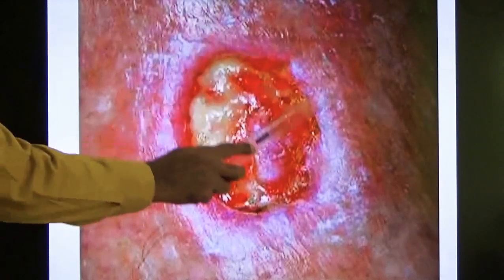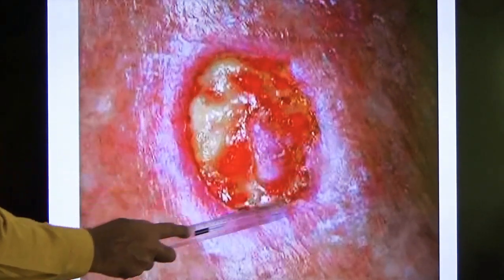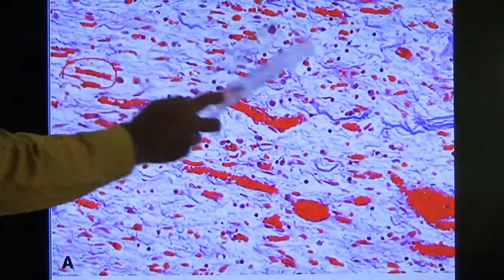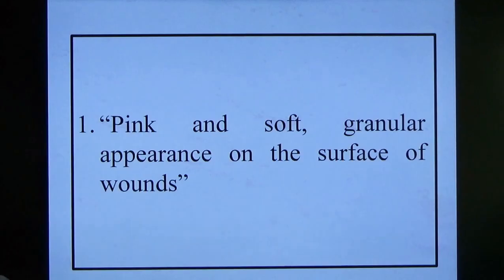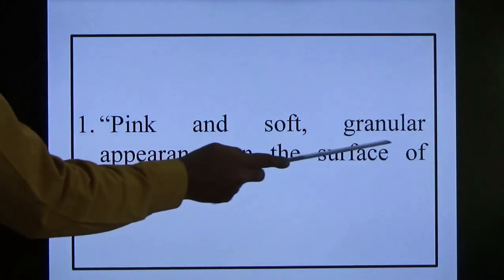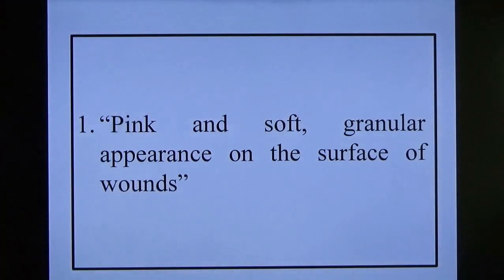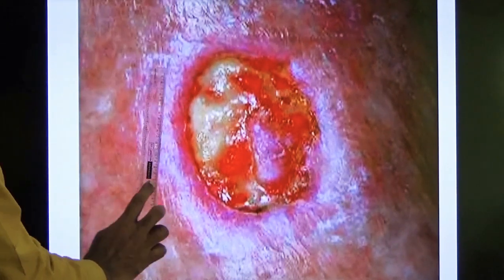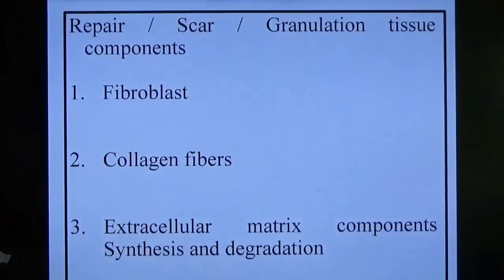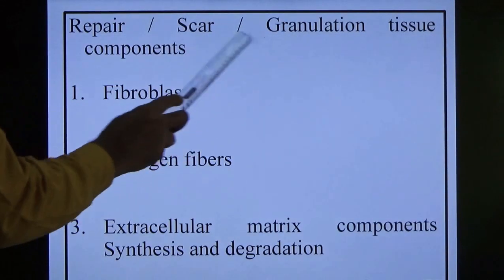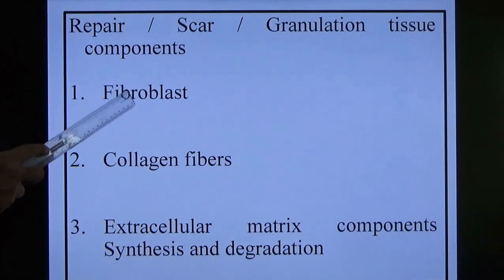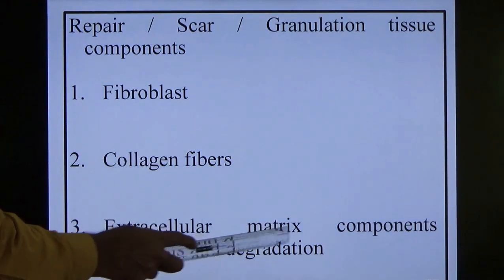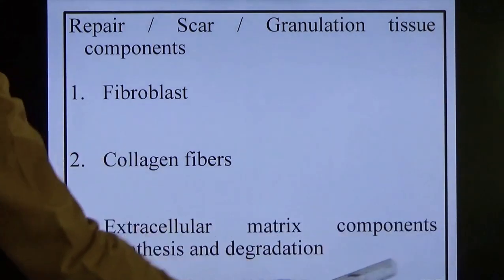Repair — granulation tissue is formed at the site of injury. You can see the pink color by the side in chronic inflammation — the granulation tissue starts to appear. In histology, granulation tissue has a pink, soft, granular appearance on the surface of the wound. It starts from the border of the wound and then covers the entire injury. The components of granulation tissue — which over time is called a scar — are: fibroblasts, collagen fibers, and ECM (extracellular matrix) synthesis and degradation.